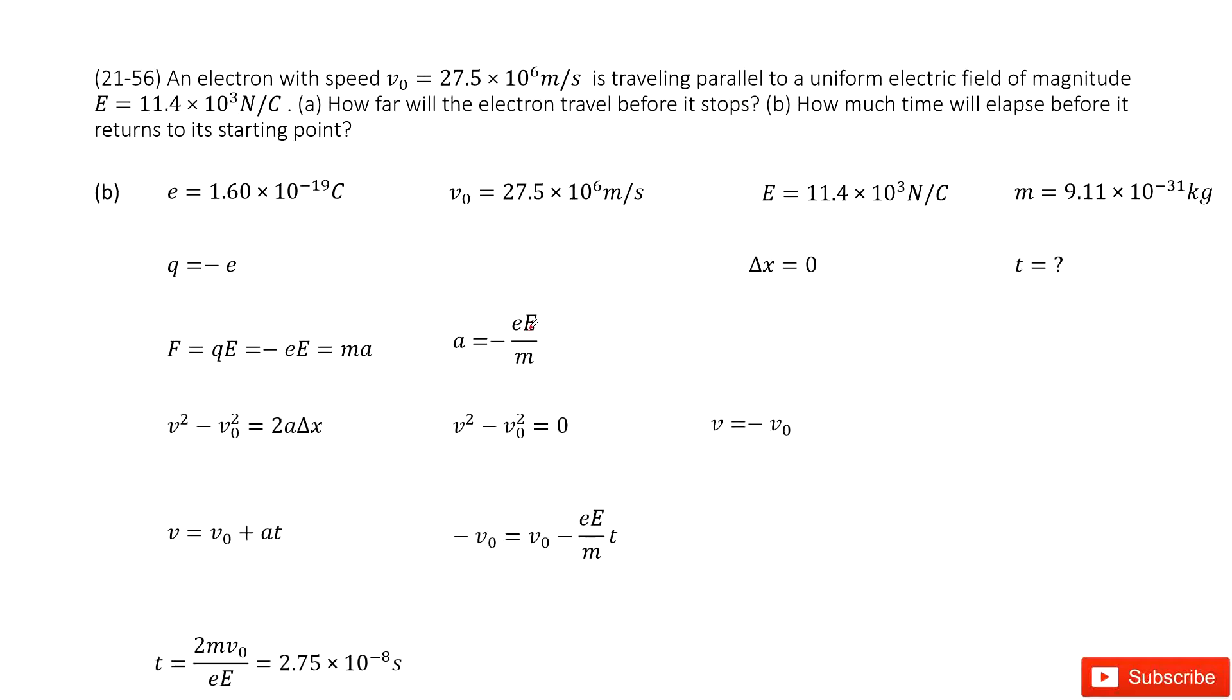The next one tells you how much time will this electron return to its starting point. So it will return to its starting point. What is the displacement it traveled? Zero. So we have delta x. Now, can you find the t? Yes.